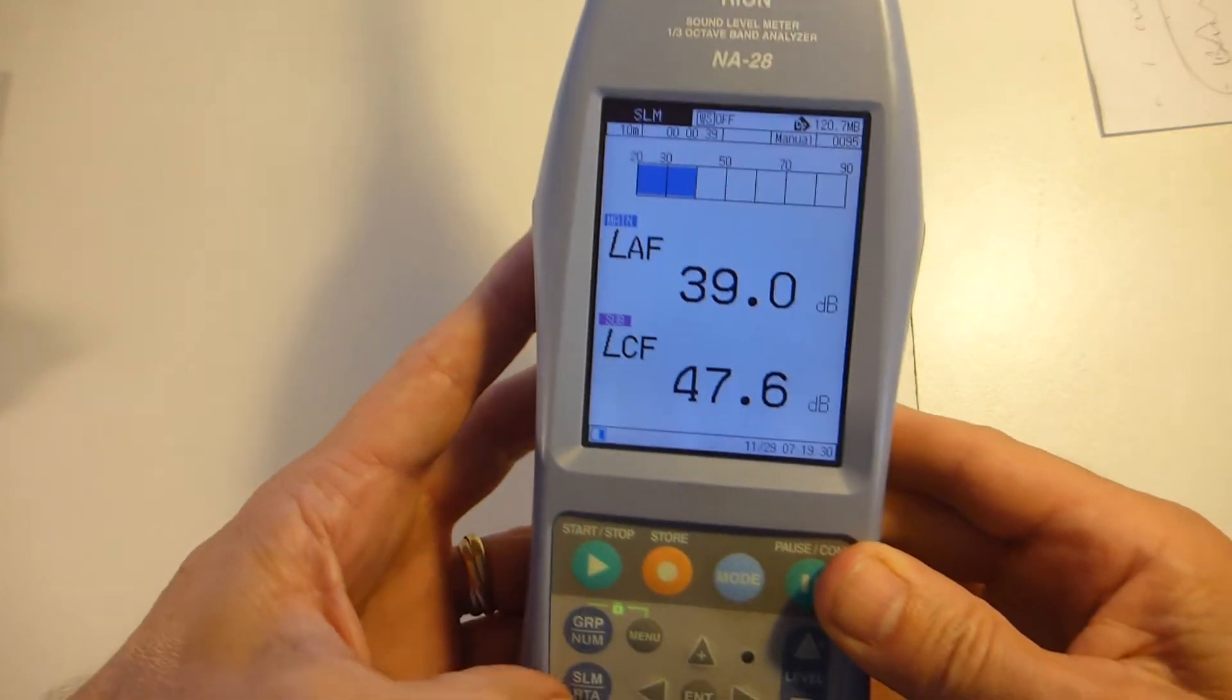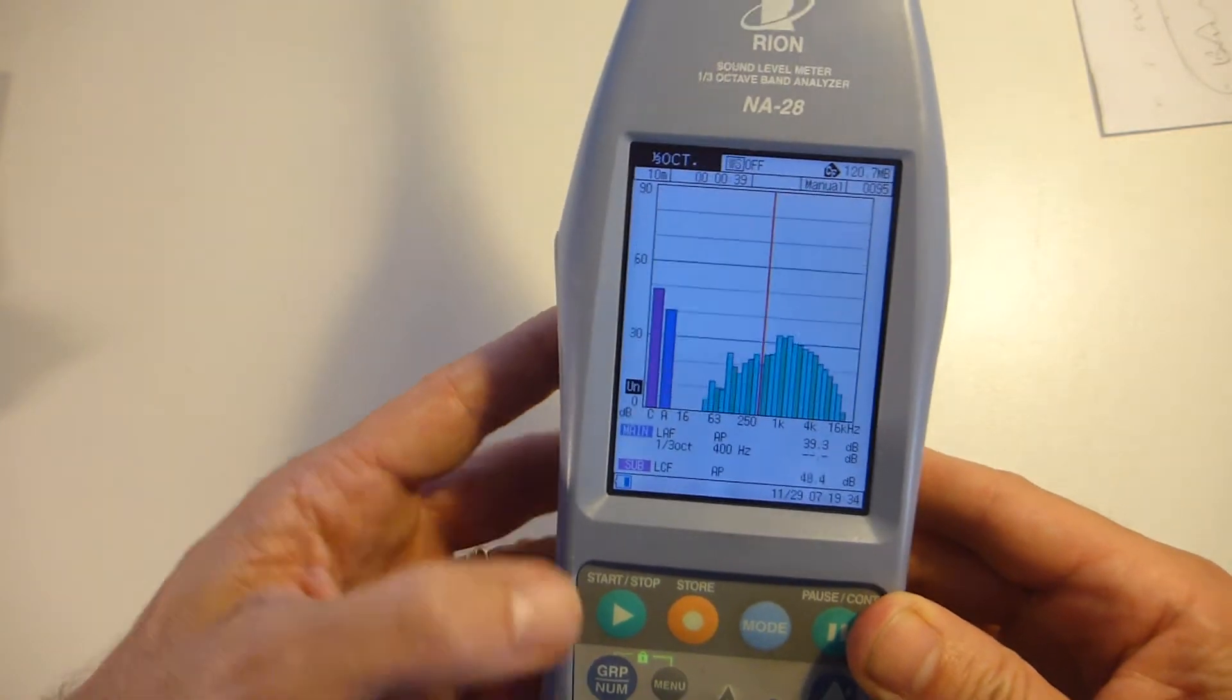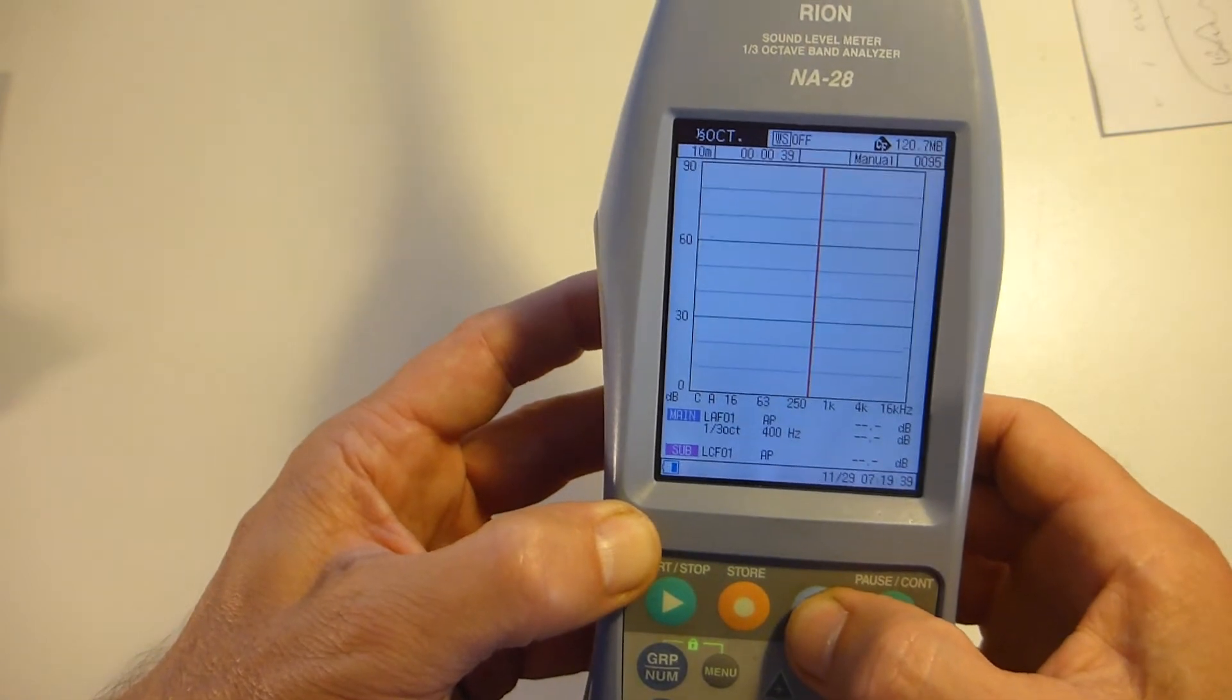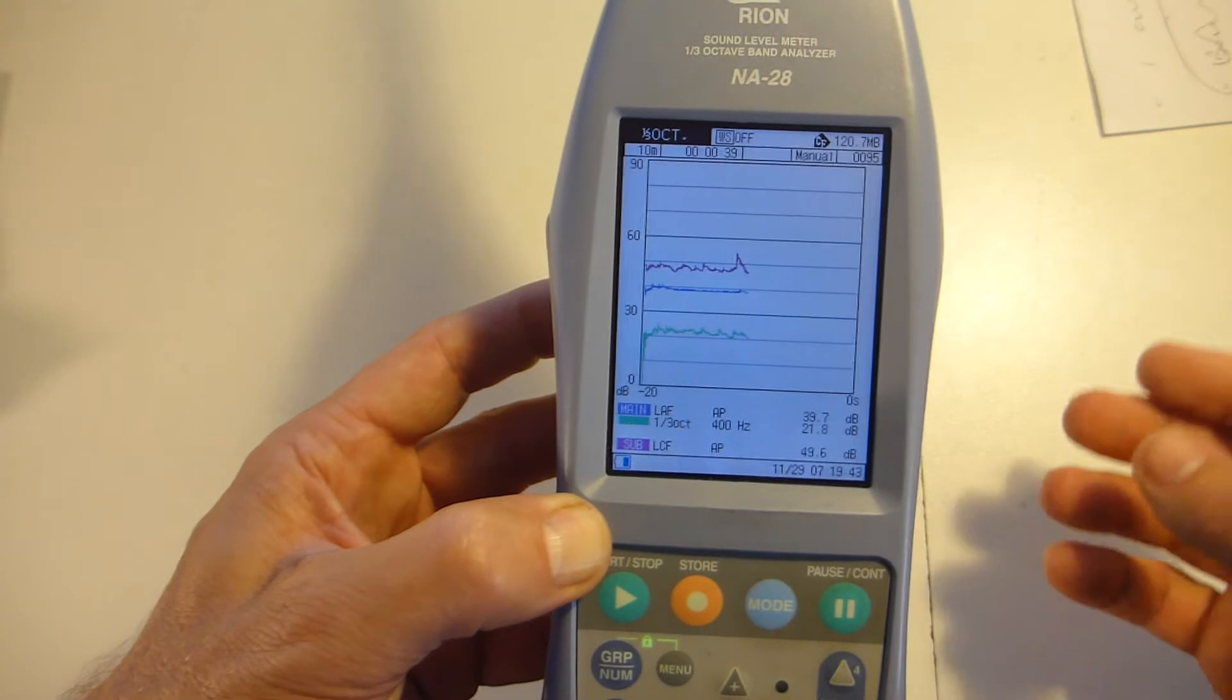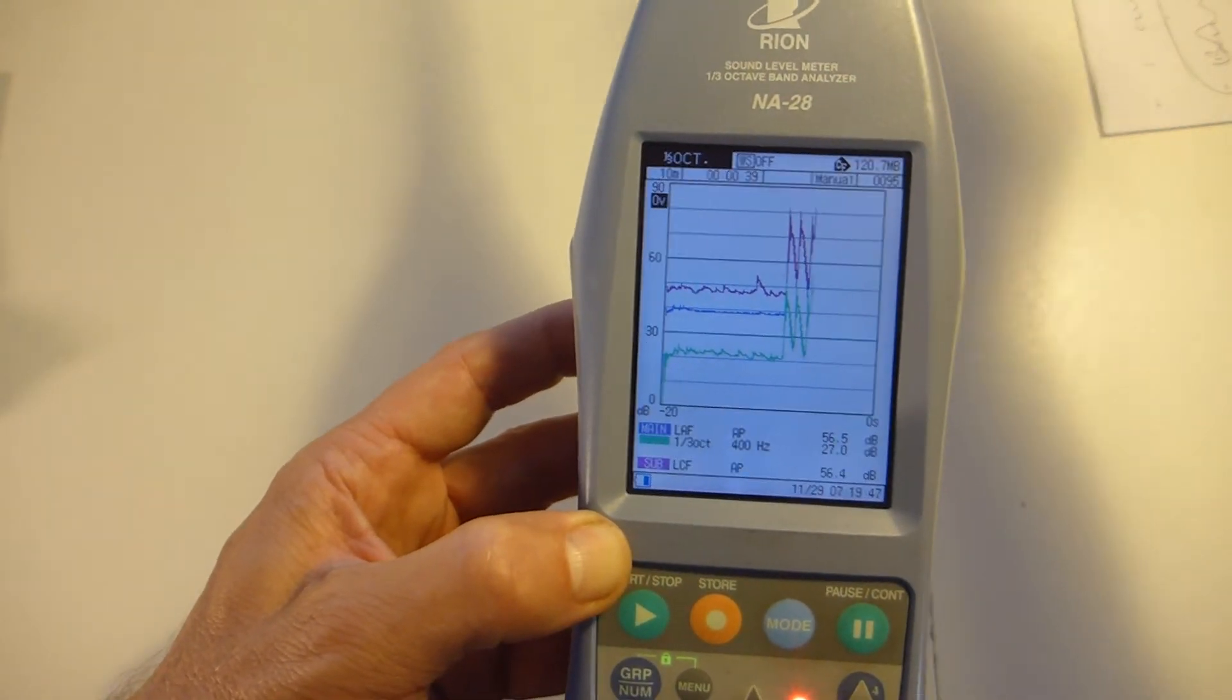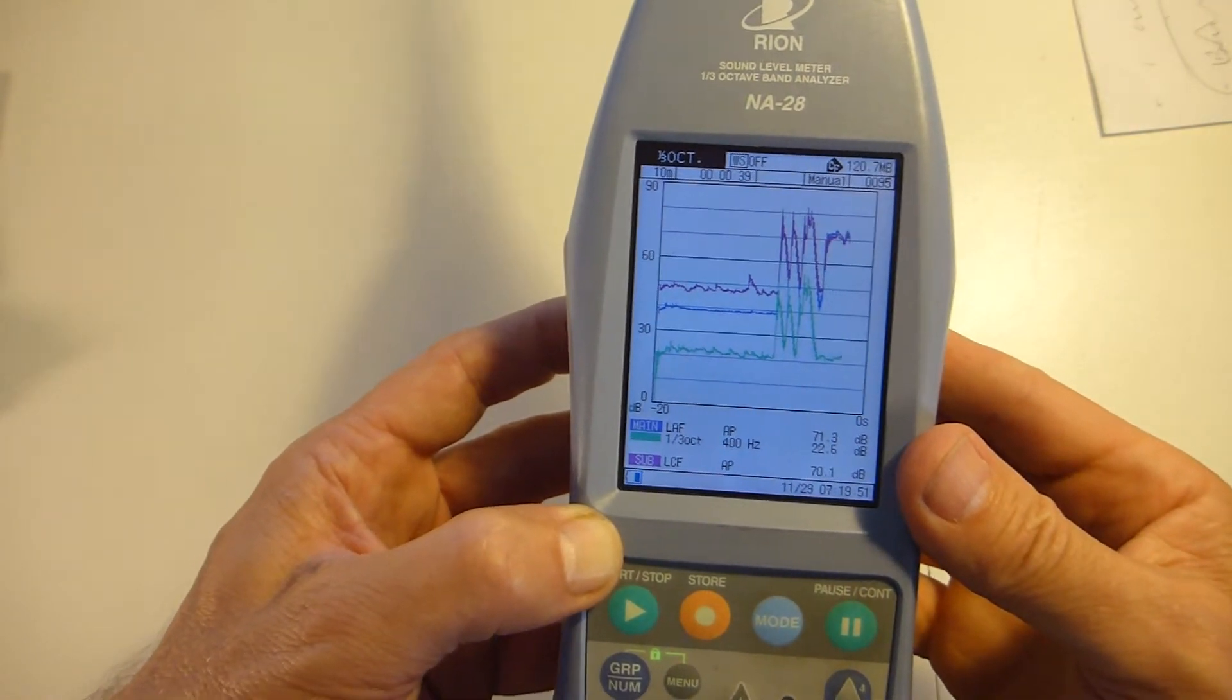So there we go, we're back in third octave mode, and this is the history trace. So that's picking up the L max there, LCF at the bottom there, but that is not picking up LC peak waveform peak.